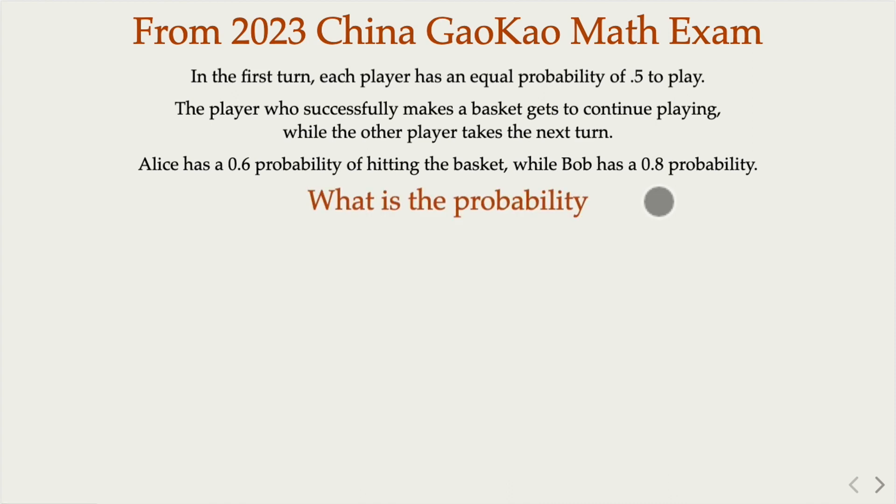We are asked two questions: What is the probability that the second throw is taken by Bob? And what is the probability that the nth throw is taken by Alice? n is an integer: 1, 2, 3, 4.